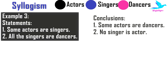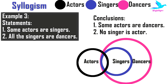Example 3. The statements are: Some actors are singers, and all singers are dancers. The conclusions are: 1. Some actors are dancers. 2. No singer is actor. Using black for actors, blue for singers, and magenta for dancers — since some actors are singers, some part of the two circles will get merged. Since all singers are dancers, the bigger circle of dancers includes all singers. Conclusion 1, 'Some actors are dancers,' is definitely true, because the actors included in the portion of singers are also dancers. Conclusion 2, 'No singer is actor,' is false, because clearly some singers are actors.